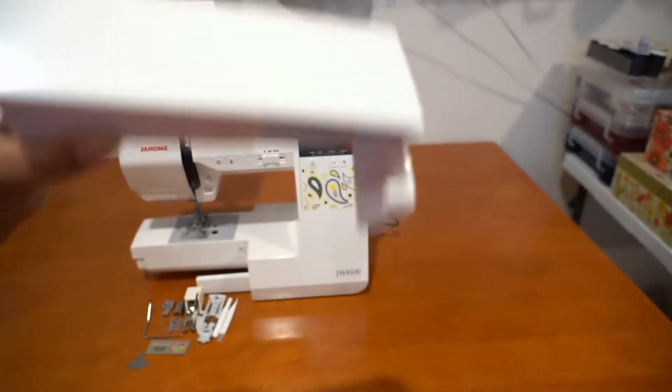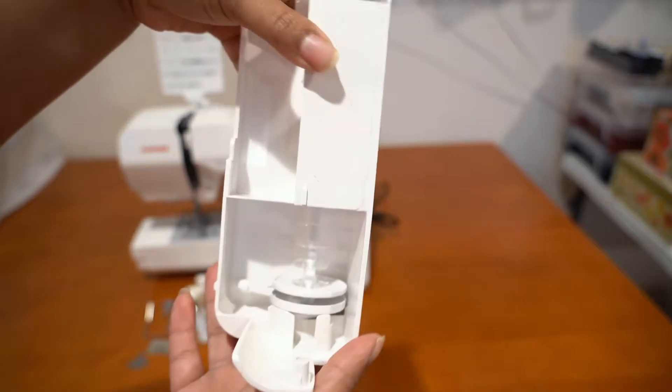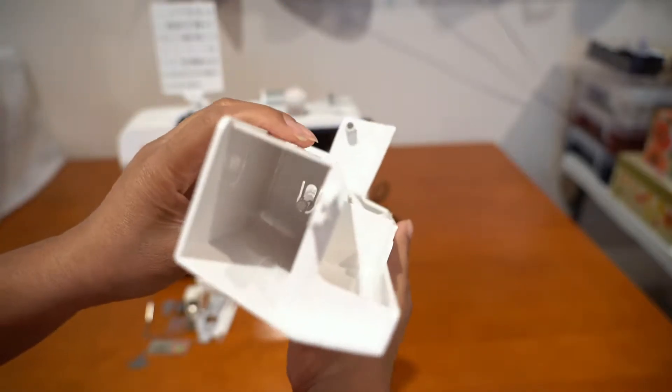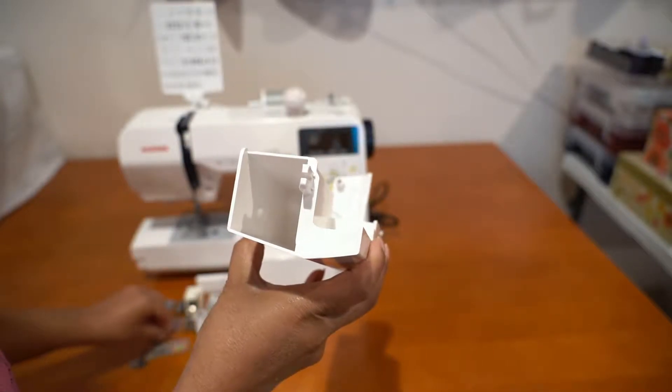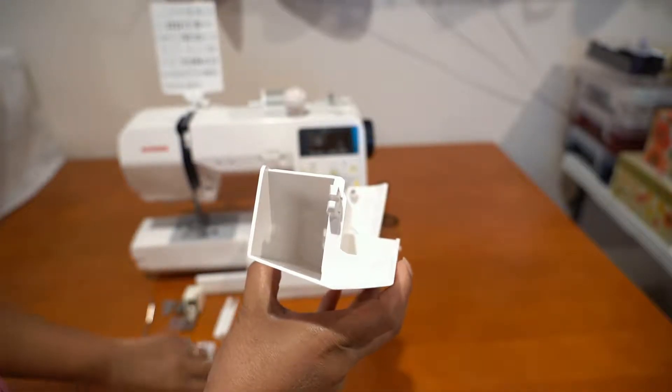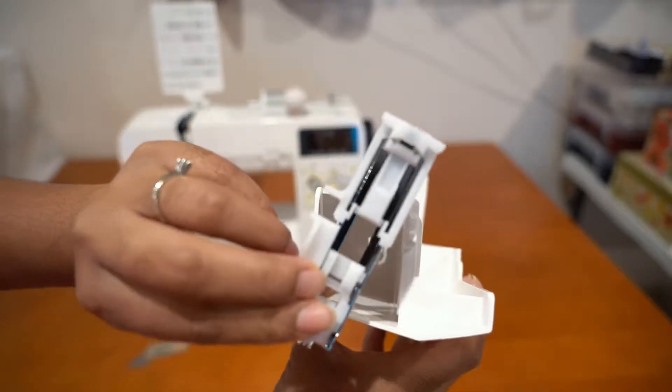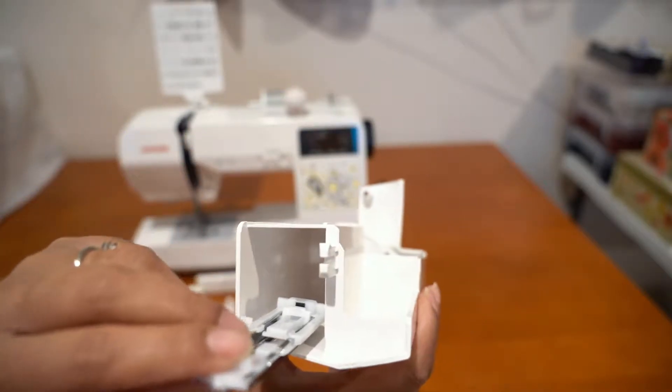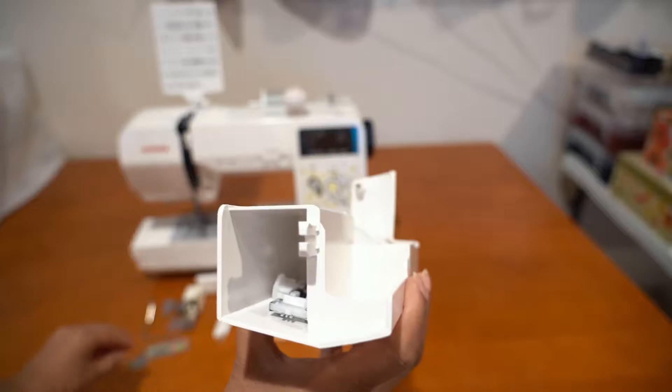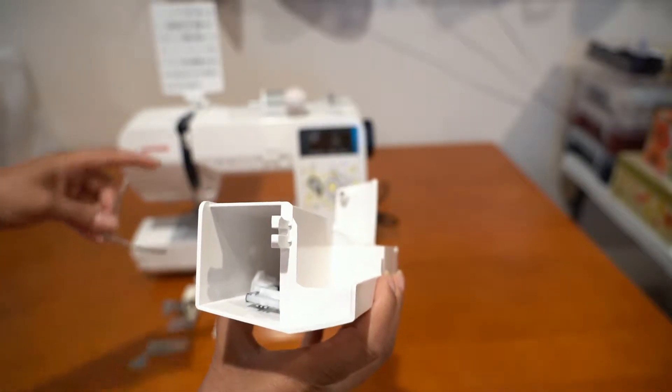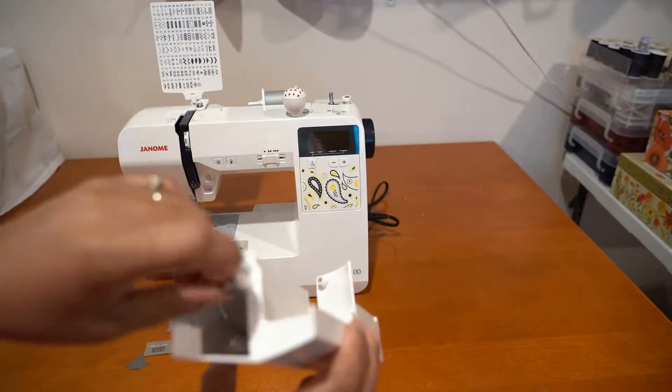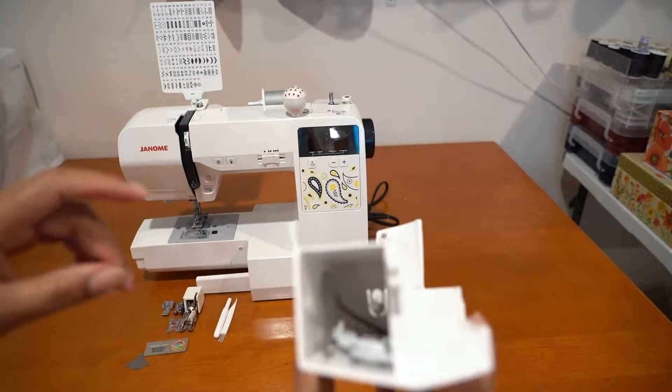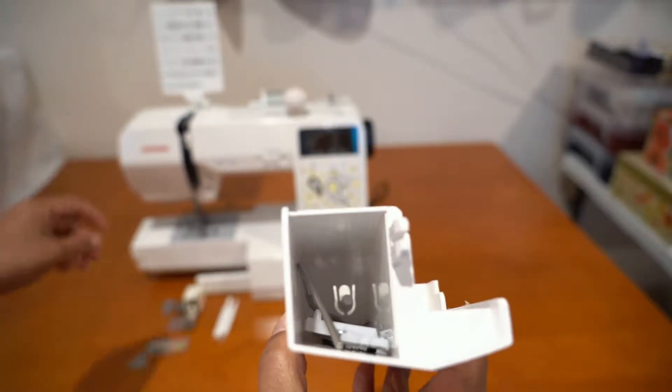That's all for the spool pin compartment. Now let's move on to the accessories compartment. Just remember, there's no right or wrong way to put the accessories in this compartment. Now that we have less accessories to put in here, it will make sure that all of our items fit properly and not fall out as we're trying to clip it back onto the sewing machine when we're done.